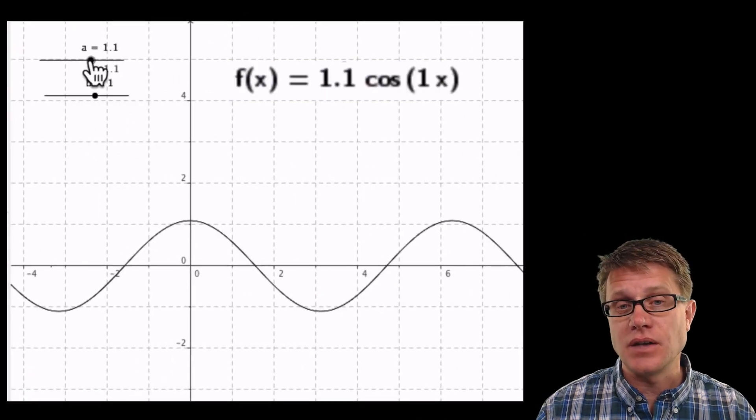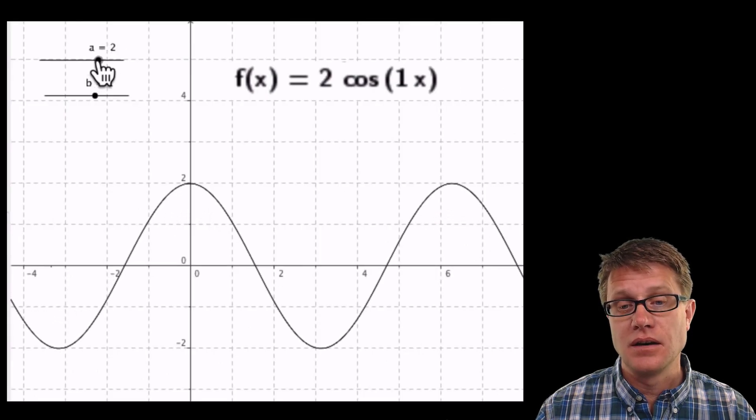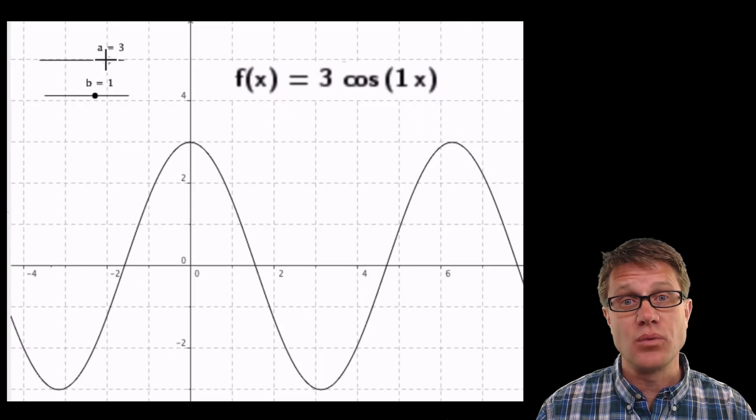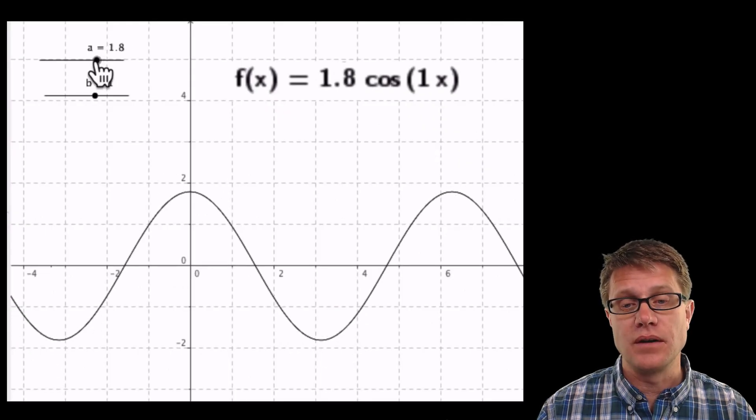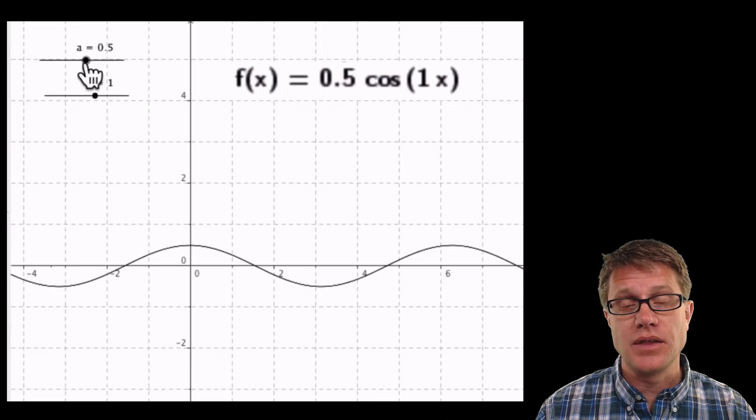b is going to be inside the parenthesis here. And so let's increase a and watch what happens to the wave. As I increase a we are getting a bigger wave. The bigger that number in front of cosine is, the bigger the wave is, or the bigger the amplitude of the wave. As I decrease it we are just going to simply get a smaller wave.